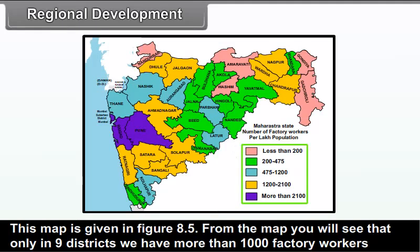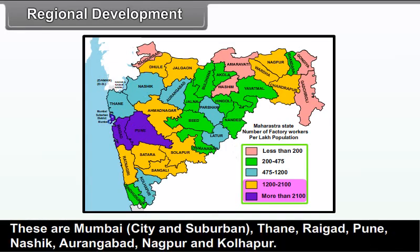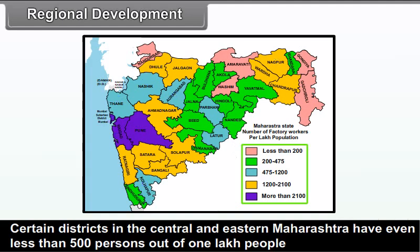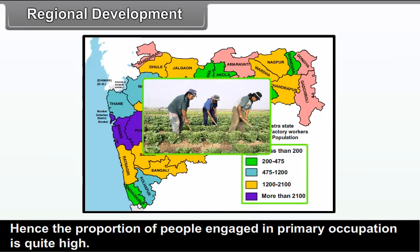Let us see the level of industrialization in the state using data on factory employment — the number of factory workers per lakh population, shown in figure 8.5. Only in 9 districts do we have more than 1,000 factory workers per lakh population: Mumbai city and suburban, Thane, Raigarh, Pune, Nasik, Aurangabad, Nagpur and Kolhapur. Certain districts in central and eastern Maharashtra have even less than 500 persons per lakh employed in factories. A somewhat similar situation exists in Nandurbar and Sindhudurg districts. Hence, the proportion of people engaged in primary occupations is quite high in these areas.